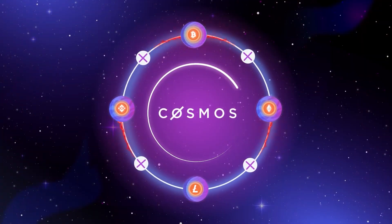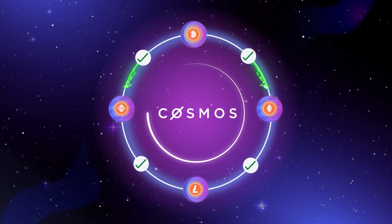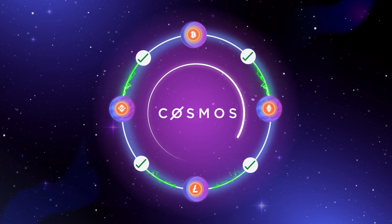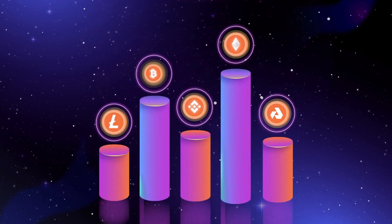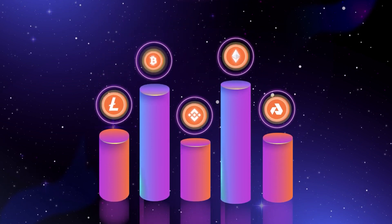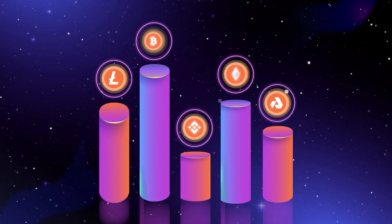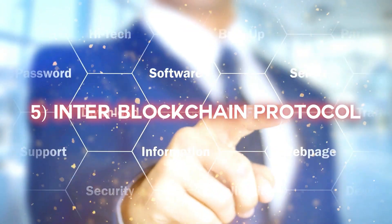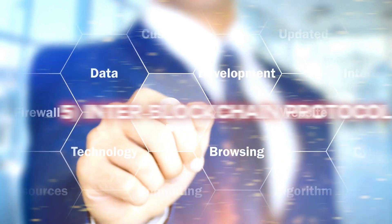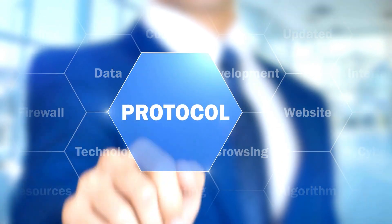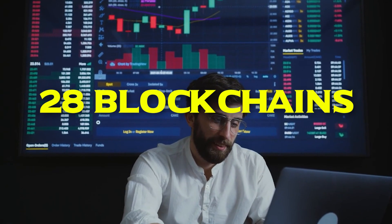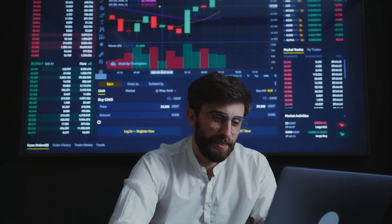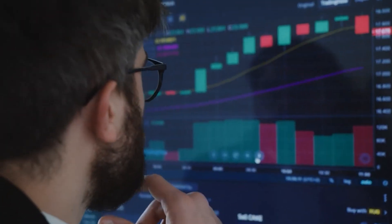Fourth, the Cosmos Hub: the central blockchain of the Cosmos ecosystem. The ATOM cryptocurrency gets its value from facilitating transactions across blockchains on the Cosmos Hub. The IBC protocol is used to link blockchains to the Cosmos Hub. Fifth, the Inter-Blockchain Protocol: the framework that makes it possible for blockchains to exchange data and tokens without speaking directly to one another. Crucially, there is no longer a need for bridges. 28 blockchains are already part of this ecosystem, released on Cosmos Hub at the beginning of 2021.